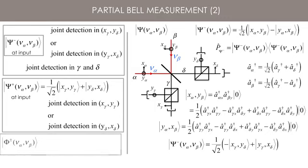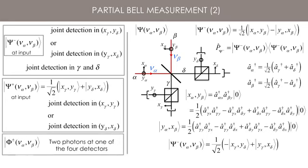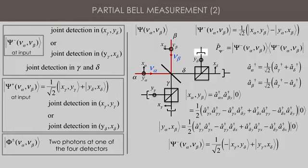I leave it to you to demonstrate that for the states phi-plus or phi-minus at the input, one has two photons at one of the four detectors, each case happening with a probability one-fourth.